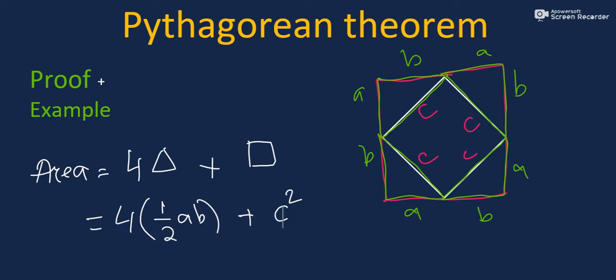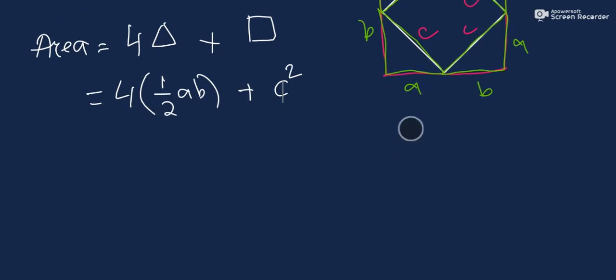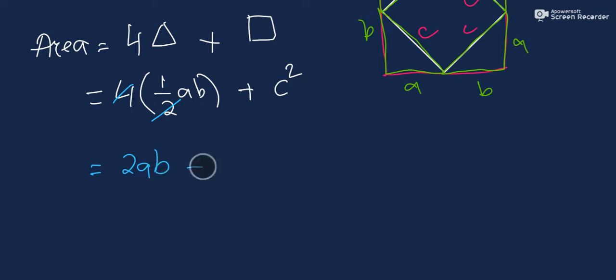The area of the inner square is C squared. So the total area — which I'll call Area 1 — is four times one-half AB plus C squared, which simplifies to 2AB plus C squared. This is the area of the bigger square using the first method.